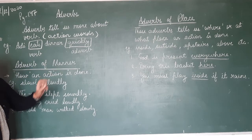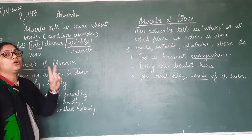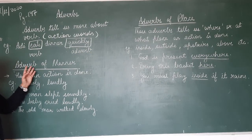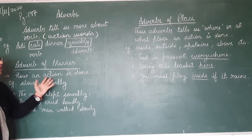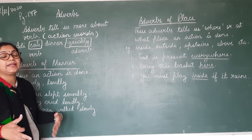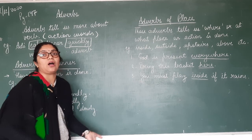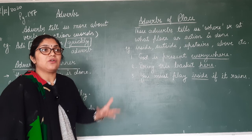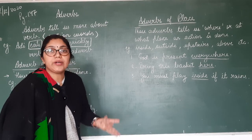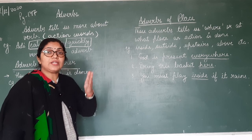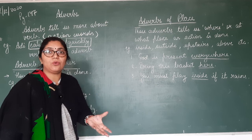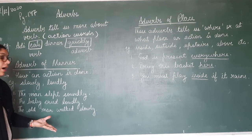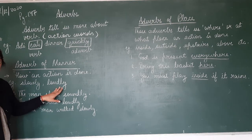Now: adverb of manner. Is chapter mein hum log two types of adverbs padenge — adverb of manner and adverb of place. Now what is adverb of manner? It describes how an action is done. Like if I am talking — talking is your verb — toh my talking kaise ho rahi hai? Slowly ho rahi hai, loudly ho rahi hai, ya whispering ho rahi hai. Toh koi action kaise ho raha hai. For example: slowly, loudly, heavily.